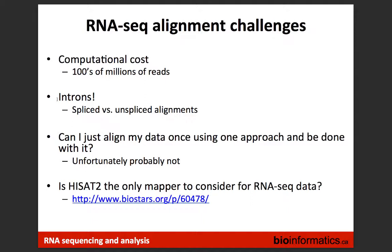Both the number of reads and the length raise a computational challenge because we need resources to align such large numbers of reads. This challenge is not unique to RNA-seq — DNA-seq has the same issue. What's unique to RNA-seq is that introns are not present. Unlike DNA, the introns are spliced out and you're stitching exons together to form transcripts, then trying to align them to a reference genome that still has those introns. The aligner has to take care of those gaps.